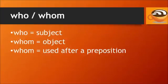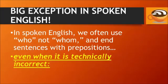So now you've learned that who is the subject of the verb, whom is the object of the verb, and we always use whom after a preposition, not who. But there's a big exception in spoken English. In everyday speaking, we often use who, not whom, and we end sentences with prepositions, even when it is technically incorrect.